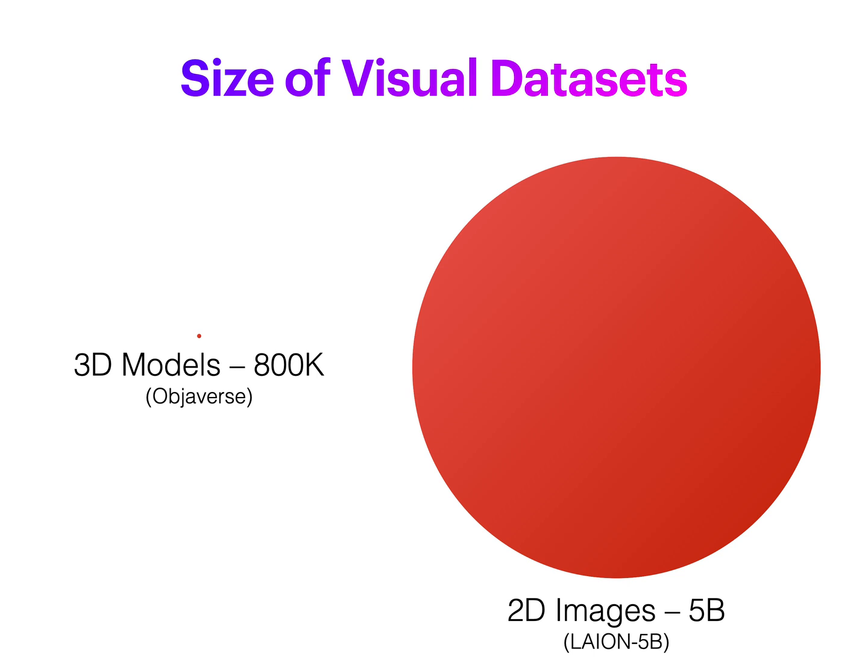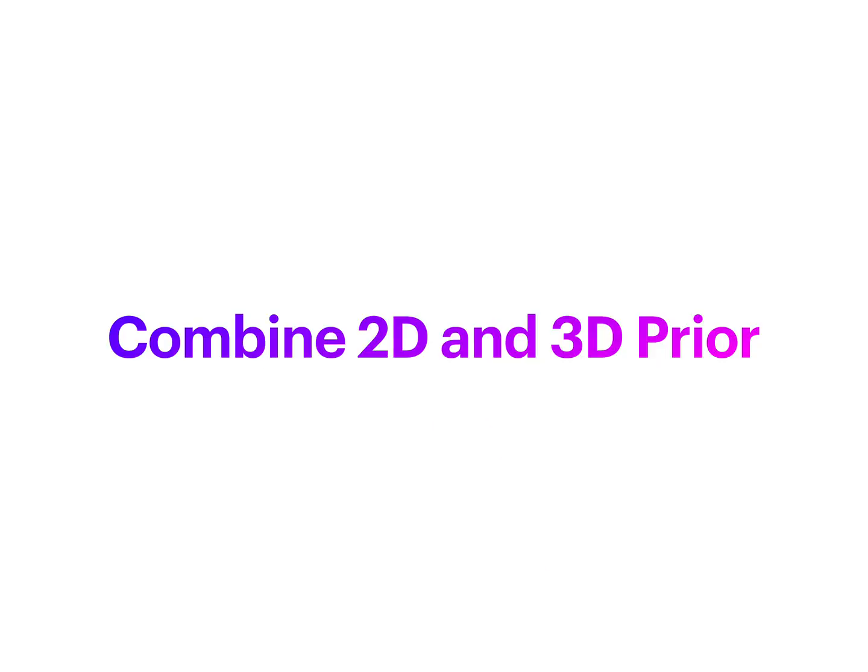The largest 3D datasets today, such as Objaverse and recently Objaverse XL, are tiny when compared with 2D datasets like LAION-5B. We believe a key to push the boundary of 3D computer vision is to combine visual priors learned from both 2D and 3D data.